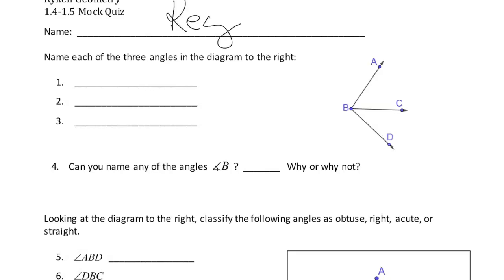Name each of the three angles in the diagram to the right. You have to name them with three letters. If I'm going to name this one right here, that's going to be ABC. I can name it angle ABC, or I can name it angle CBA.